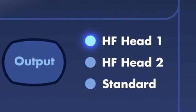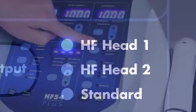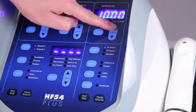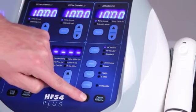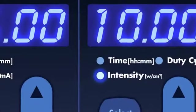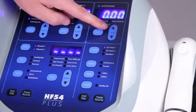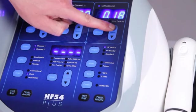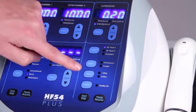To use a single sound head, select HF head number one, then adjust the time by using the up and down arrows. Press the start/stop button to begin the treatment. The intensity indicator will light automatically as the treatment starts. Ultrasound intensity can only be adjusted during a treatment using the up or down arrows. Press the start/stop button at any time to stop the treatment.